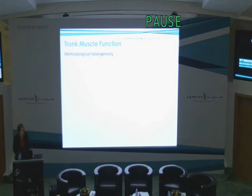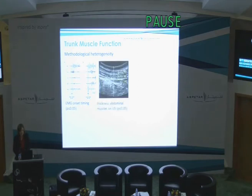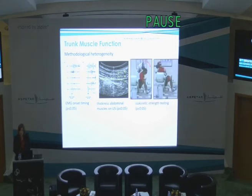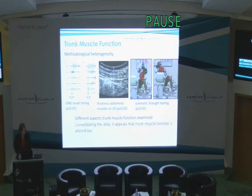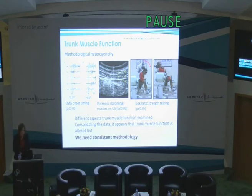Trunk muscle function was very interesting. We had three studies with considerable methodological heterogeneity: one high-quality study looking at EMG onset times, another looking at abdominal muscle thickness on ultrasound, and a third looking at isokinetic strength testing using a dynamometer. Despite the different aspects assessed, when we consolidate the data it appears trunk muscle function is altered in athletes with hip and groin pain. This fits with intervention studies that have addressed trunk muscle function. But we clearly need more consistent methodology — we couldn't meta-analyse this data and encourage it as an area of future research.